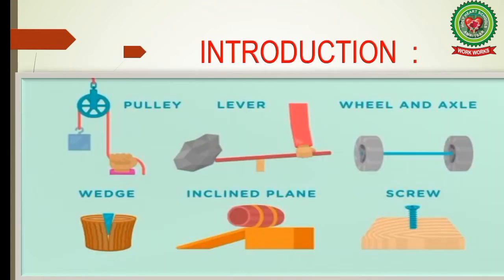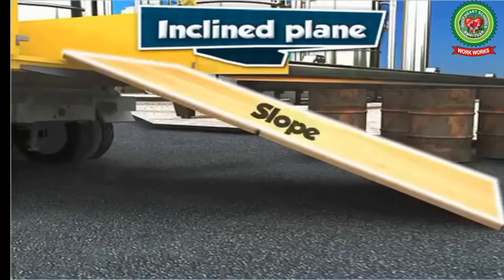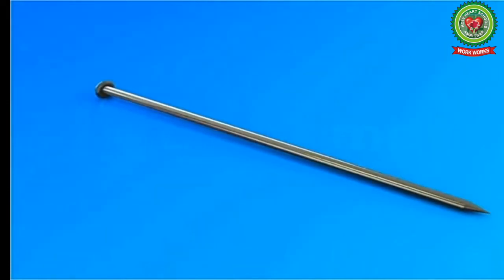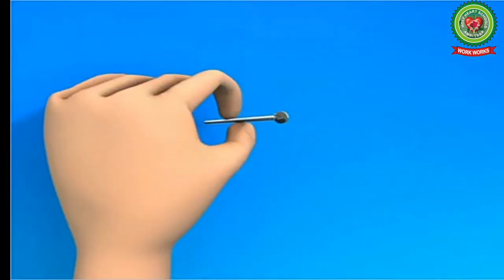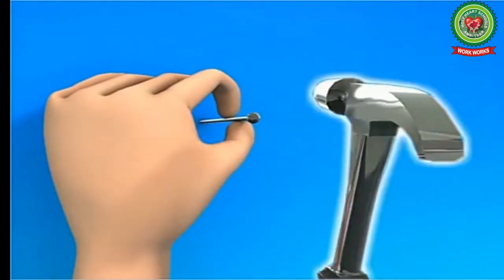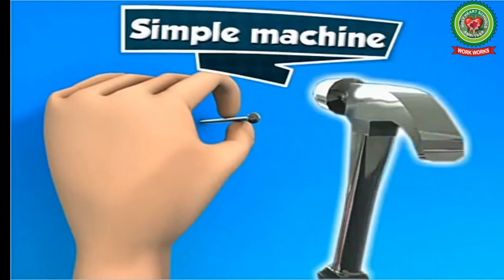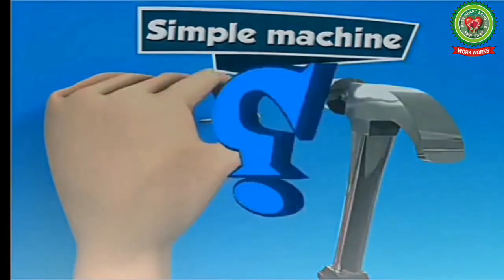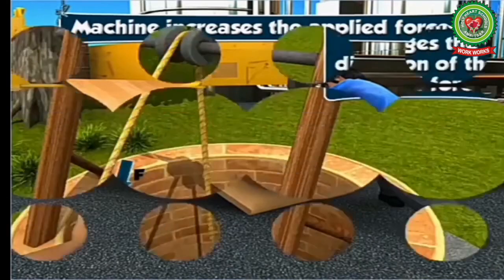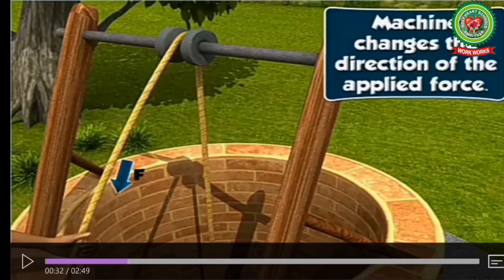Let's get started. In this module you will learn about simple machines. Suppose you have to drive a nail into the wall — you do this using a hammer, because a hammer makes the work easy. Simple machines make work easier by increasing the applied force and by changing the direction of the applied force.